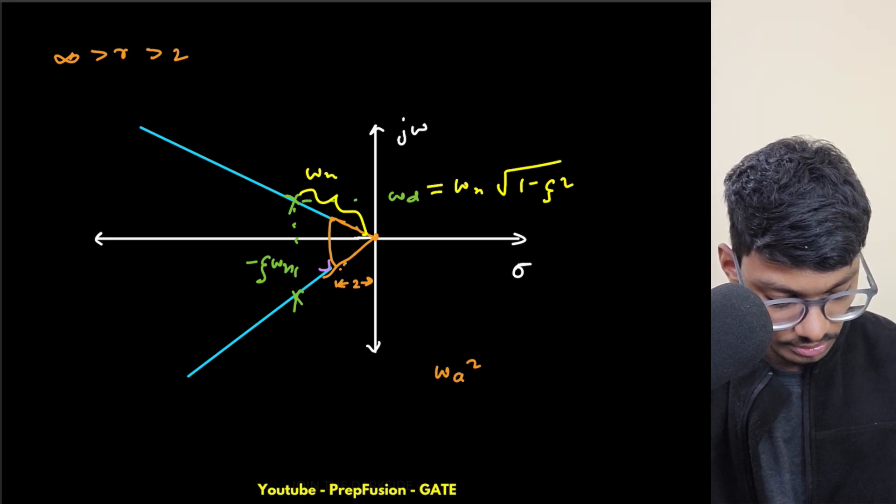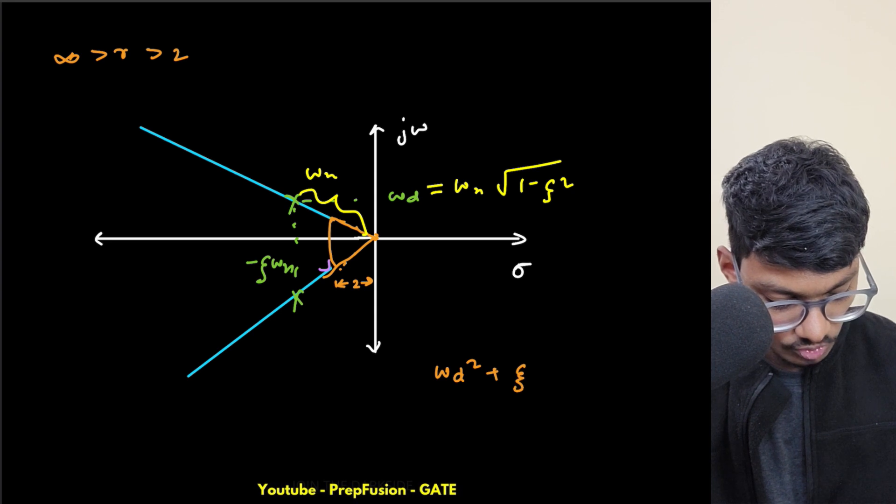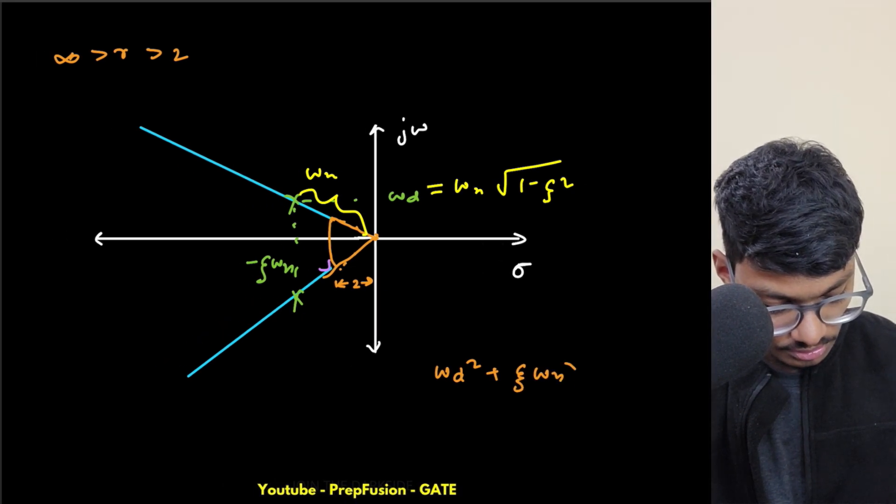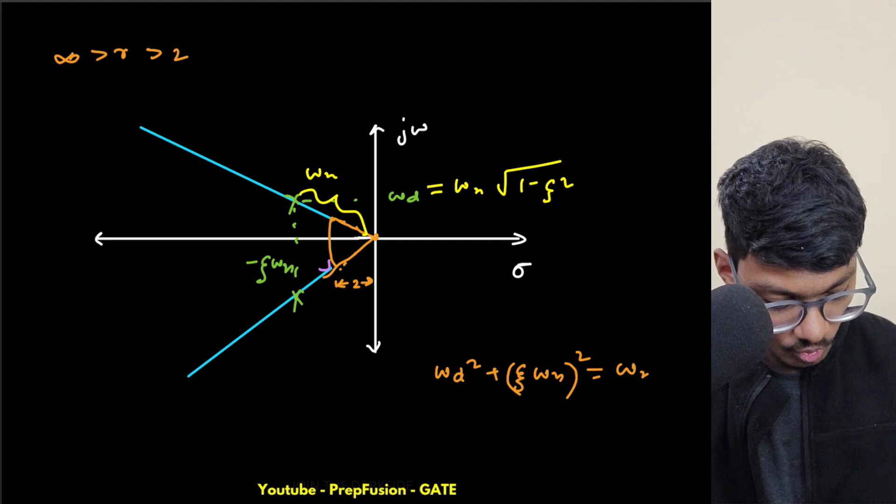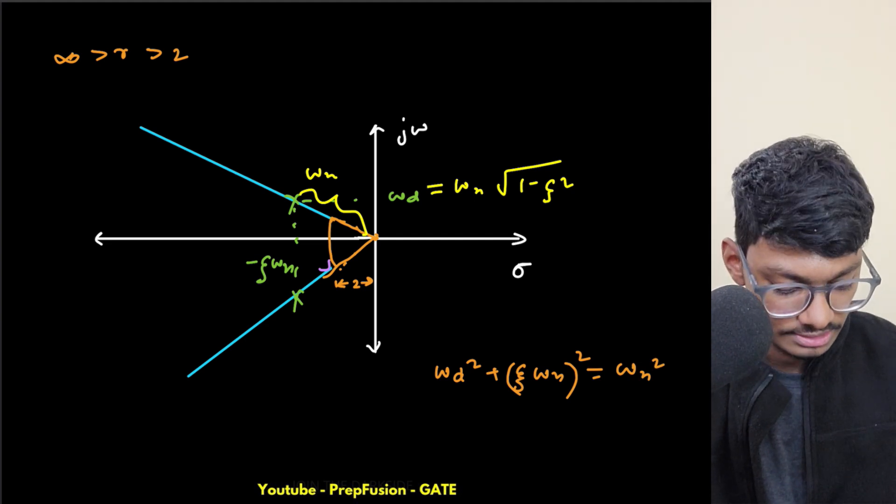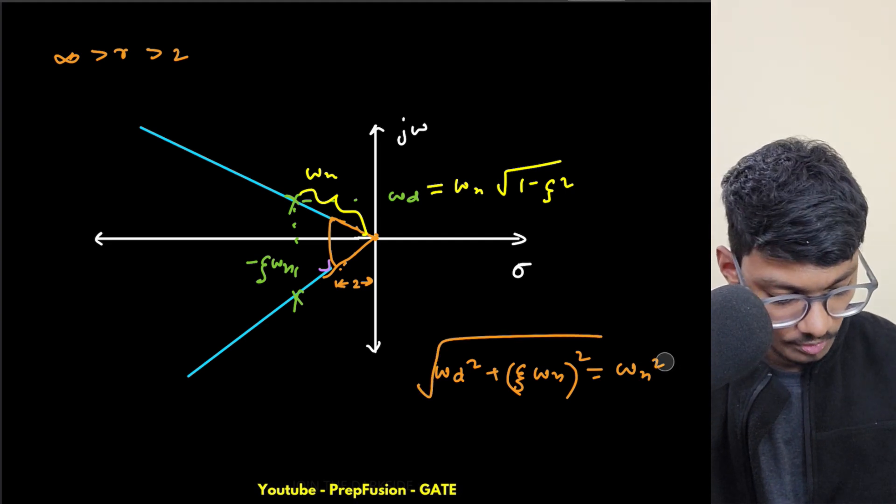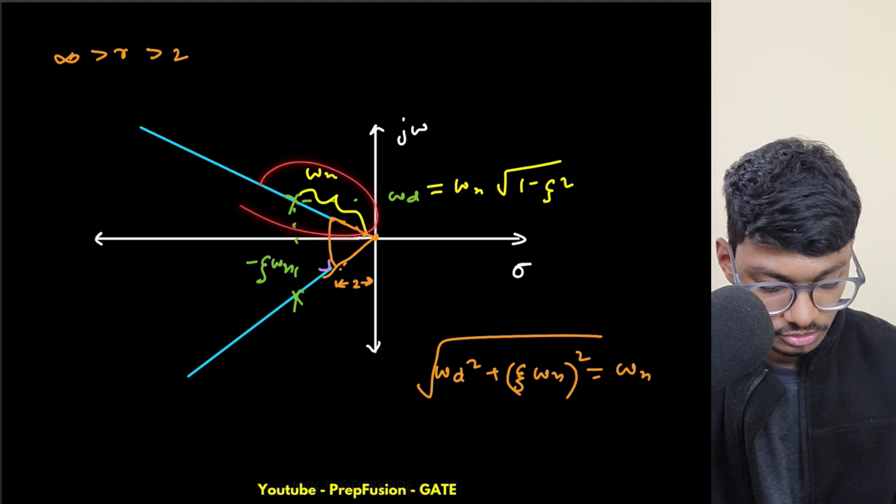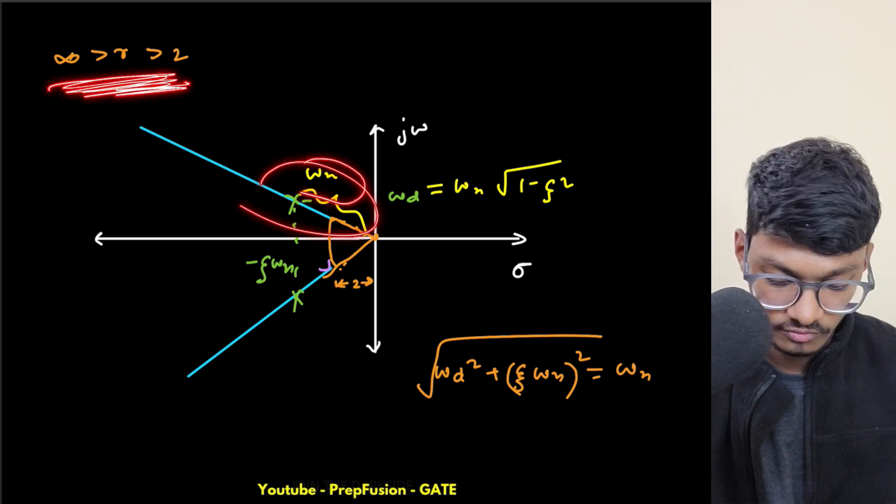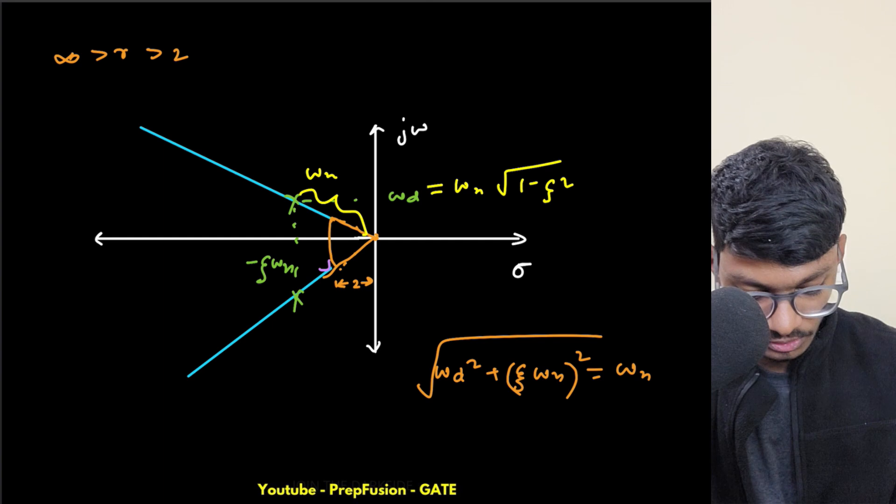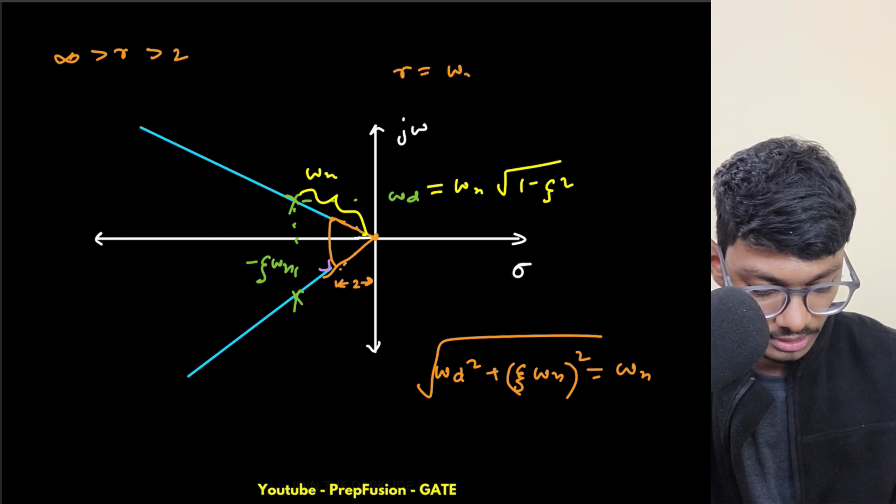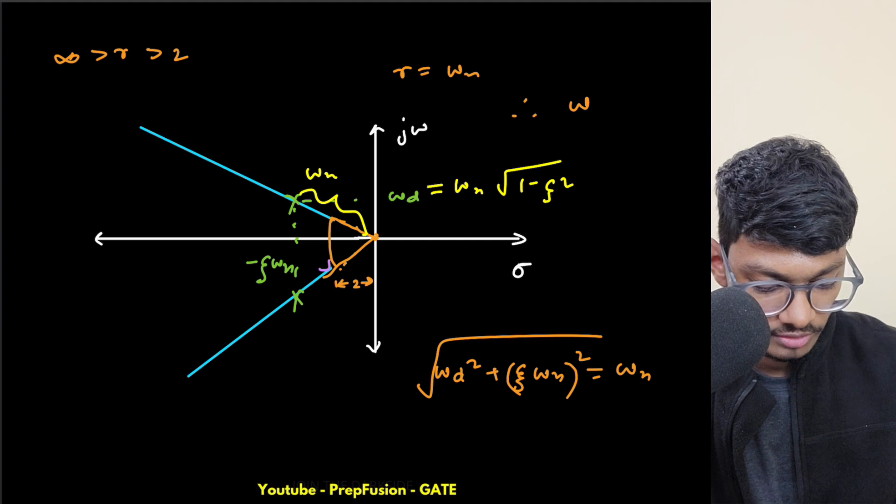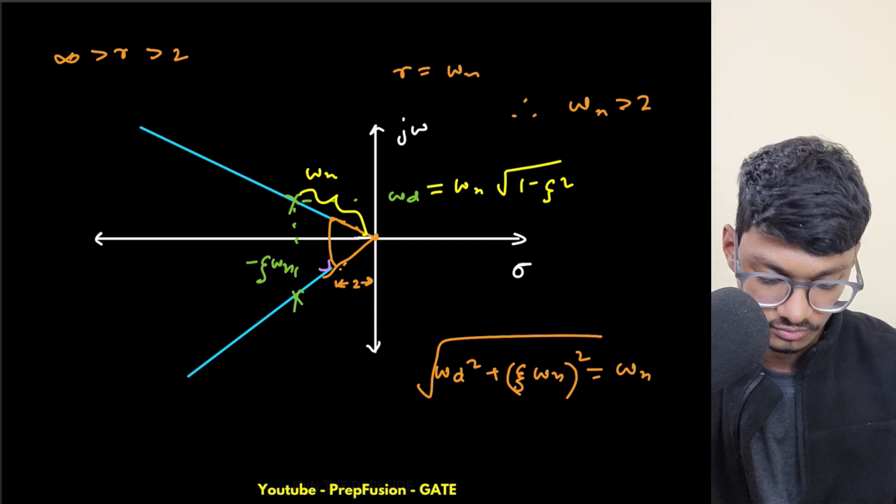So omega d squared plus zeta omega n whole squared equals omega n squared. The distance will be the square root, which is omega n. So this omega n is basically the range of r. So my r equals omega n. Hence my omega n has to be greater than two.